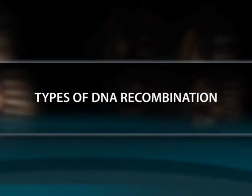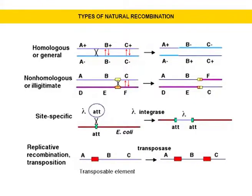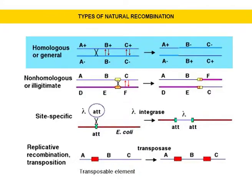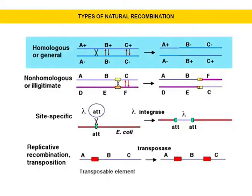Types of DNA recombination. Recombination is the production of new DNA molecules from two parental DNA molecules or different segments of the same DNA molecule. Four types of naturally occurring recombination have been identified in living organisms. The first one is general or homologous recombination, which occurs between DNA molecules of very similar sequence, such as homologous chromosomes in diploid organisms.